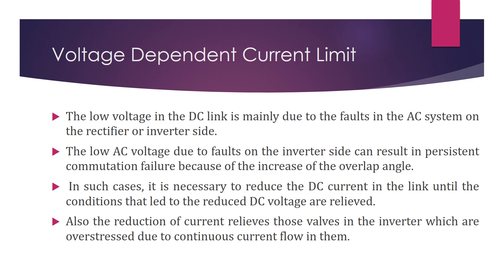The next topic is voltage dependent current limit. The low voltage in the DC link is mainly due to fault in the AC system on the rectifier or inverter side. Low AC voltage due to fault on the inverter side can result in commutation failure because of an increase in overlap angle. In such cases, it is necessary to reduce the DC current in the link.